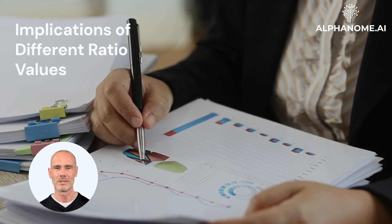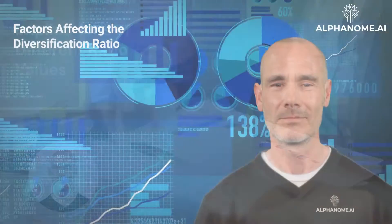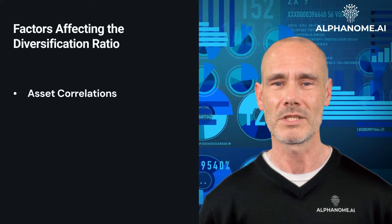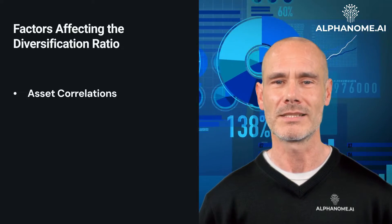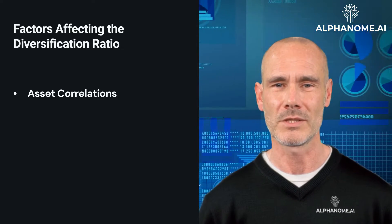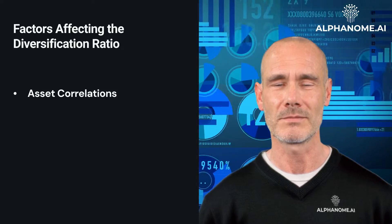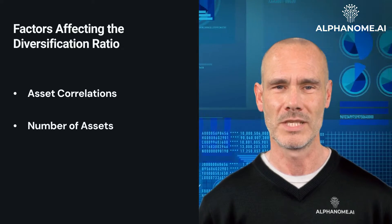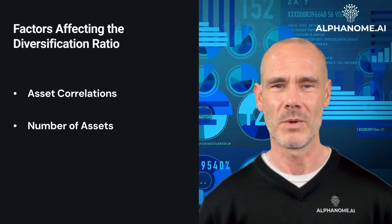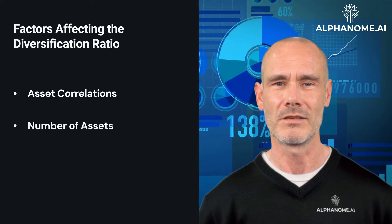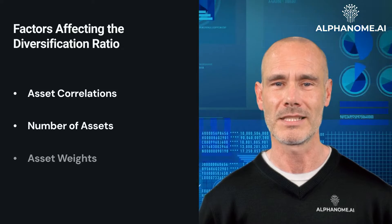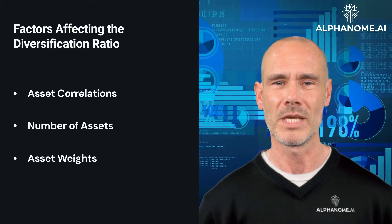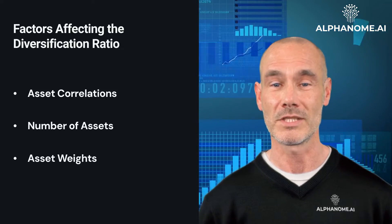However, portfolio managers strive to minimize this ratio as much as possible. Factors affecting the diversification ratio include: Asset correlations — the ratio is heavily influenced by correlations between assets; lower correlations lead to greater diversification benefits and a lower ratio. Number of assets — generally, increasing the number of assets can improve diversification, as long as they are not highly correlated, though beyond a certain point, adding more assets may not significantly improve the ratio. Asset weights — an uneven distribution, with high concentration in a few assets, can limit diversification benefits.